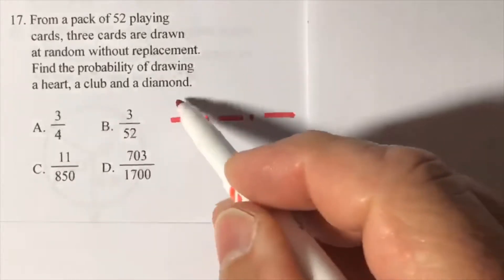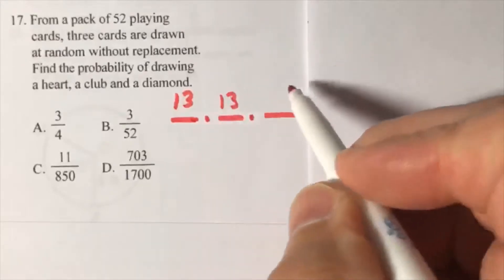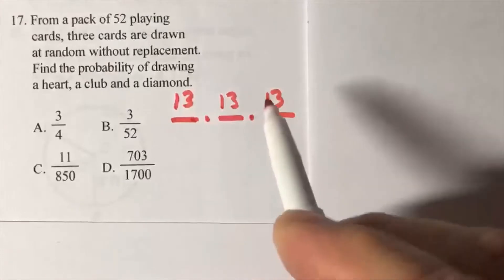There are 13, that'll go here. How many clubs are there? That goes here. And how many diamonds? So these numbers are the same. What changes will be the denominator.